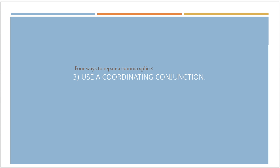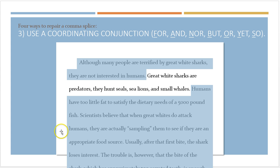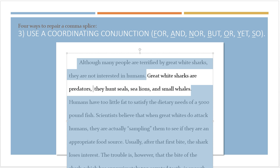A third option for repairing a comma splice is to add a coordinating conjunction and use it along with the comma. You might have learned the coordinating conjunctions as FANBOYS — that's the acronym for the first letter of each of them: for, and, nor, but, or, yet, and so. One way to fix a comma splice is to simply add one of those coordinating conjunctions, because that makes a more substantial break between the two big ideas. For example, 'Great white sharks are predators,' and I can add 'and' here, which makes the sentence grammatically correct because I've separated those major ideas using both a coordinating conjunction and a comma.